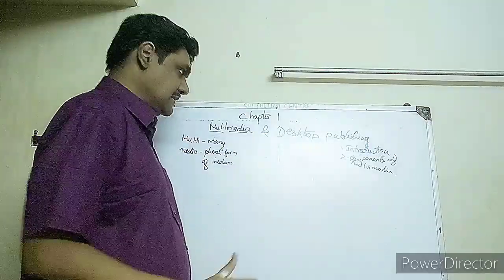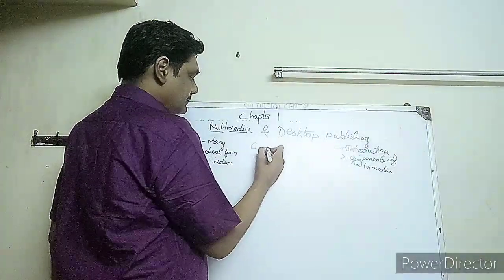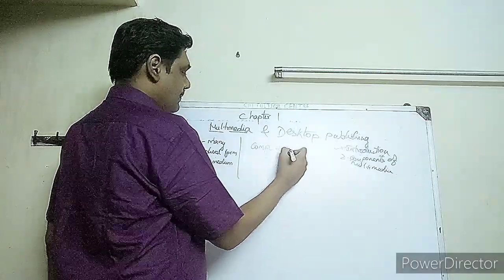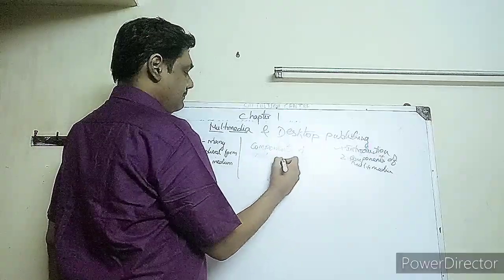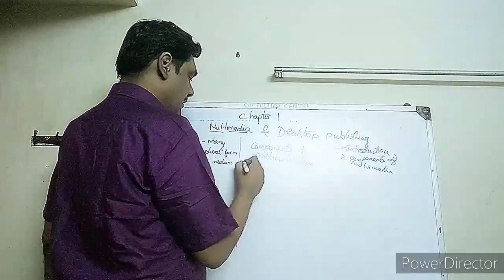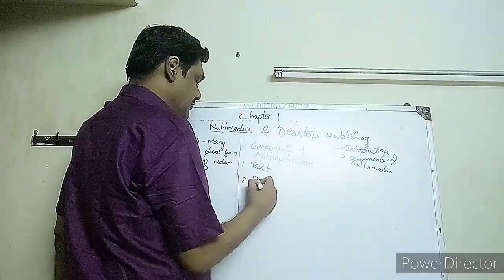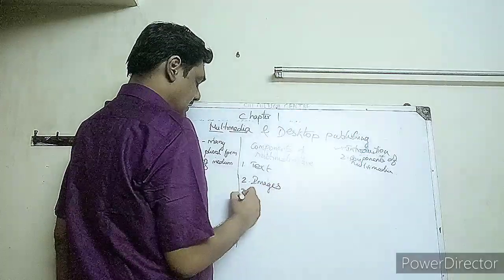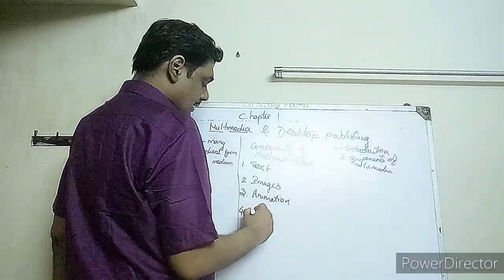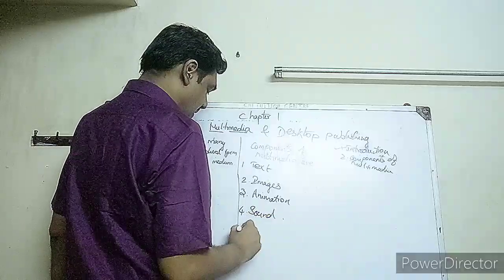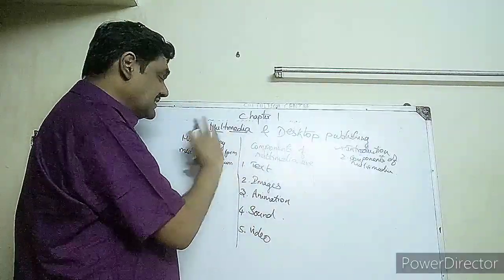Now we'll see the components of multimedia. The components of multimedia are: first, text; second, images; third, animation; fourth, sound; and fifth, video. All these five mediums together is called multimedia.